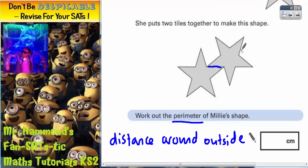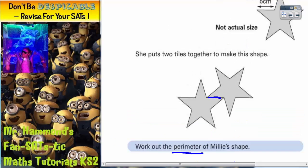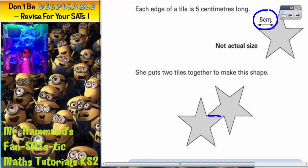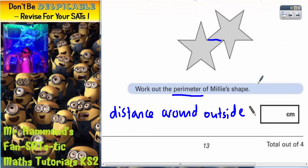So all the other lines must be five because that's what we get told at the start of the question there. They're all fives. So one way of doing it would be to actually write fives on all the lines and then count them up.